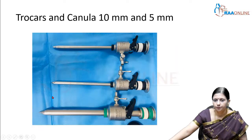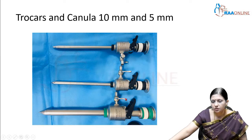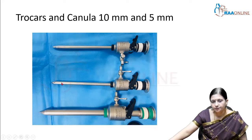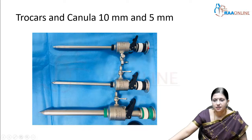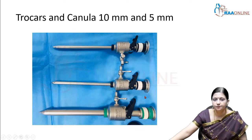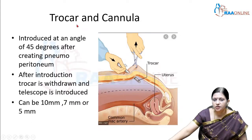These are the trocars and cannulas which are 10mm and 5mm. This is closed here, and if you move it to this side you can attach the insufflation tubing here. This is the cannula with a sharp trocar inside. This is the air inlet. The trocar is removed and then the laparoscope is introduced after removal of the trocar from the cannula.